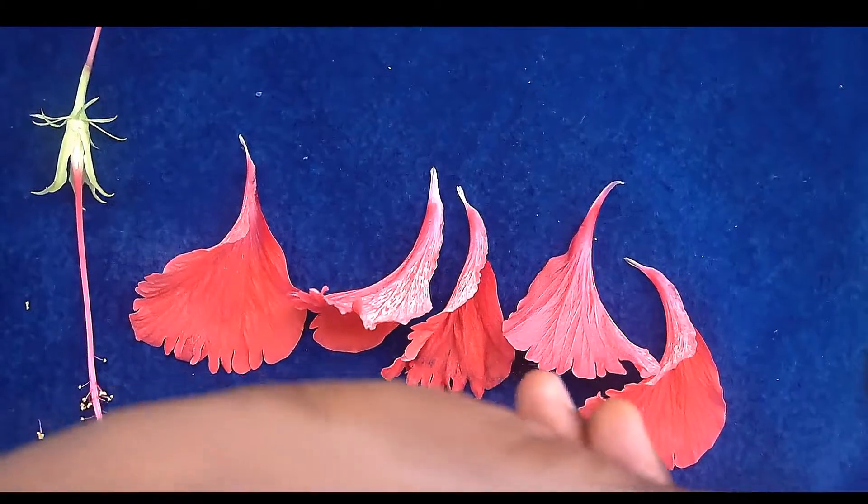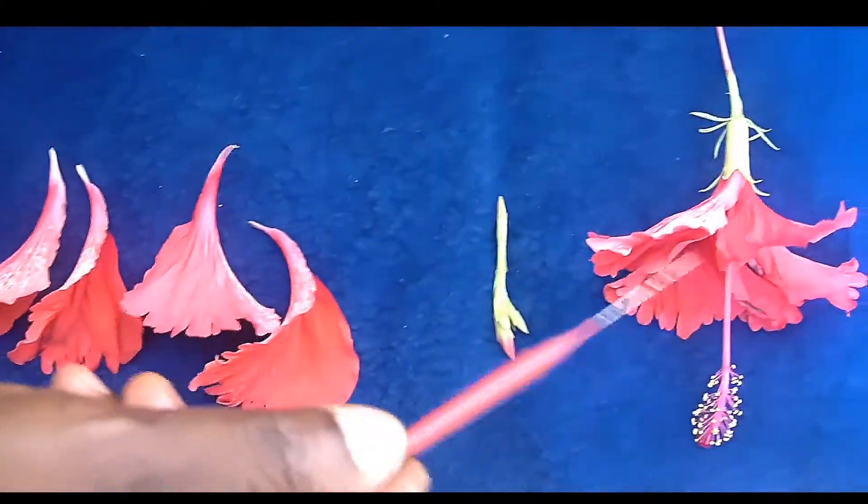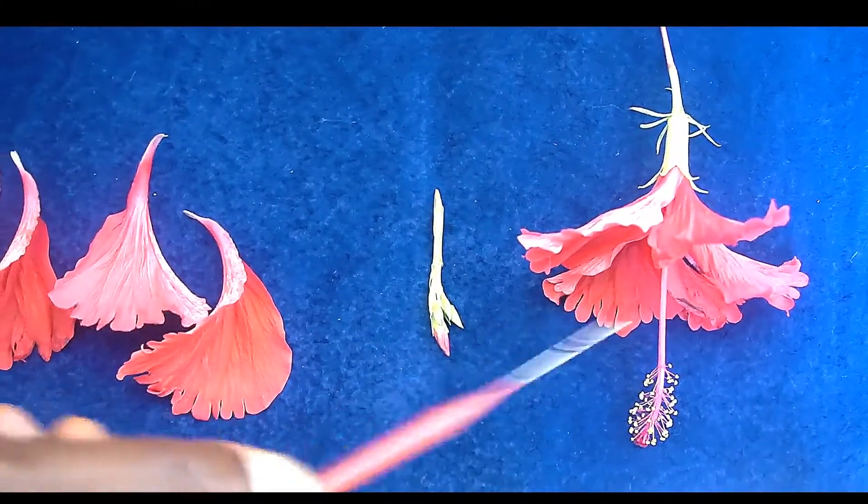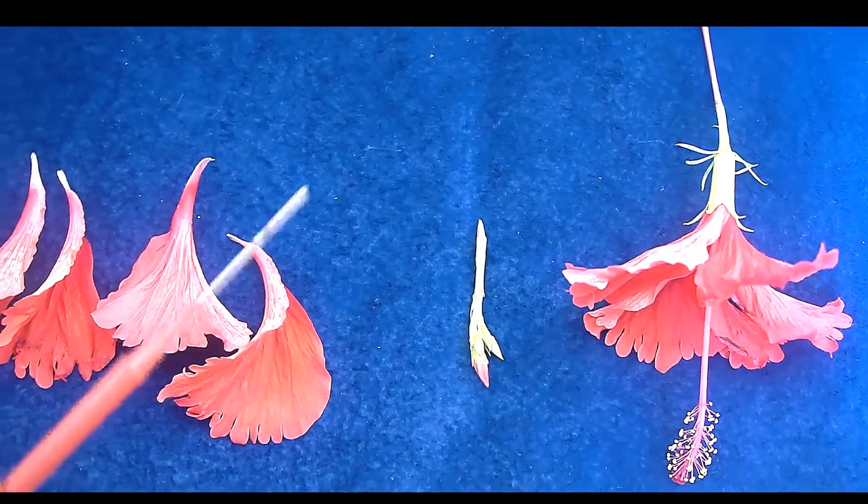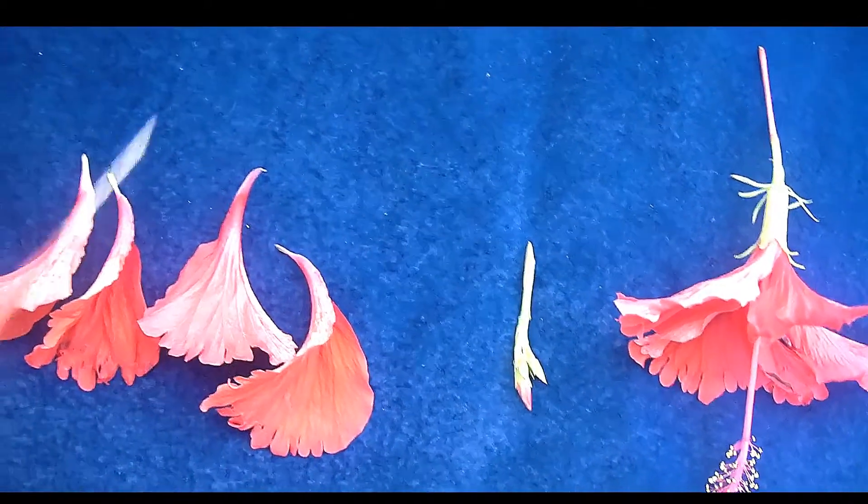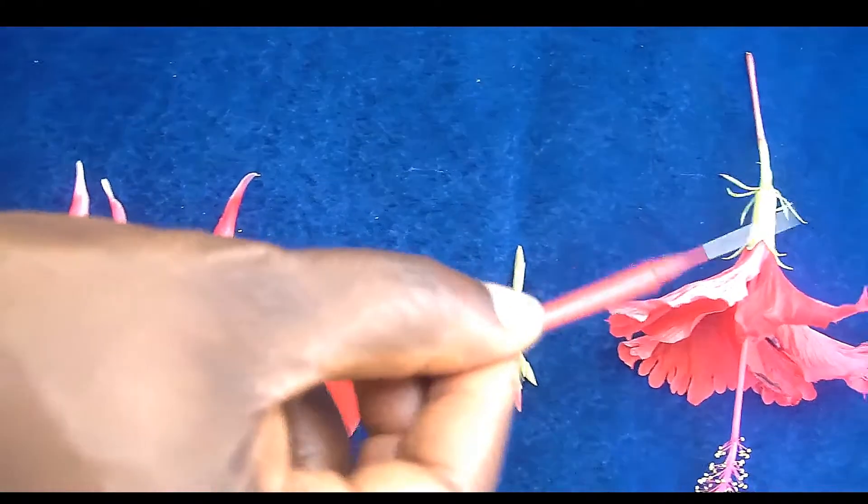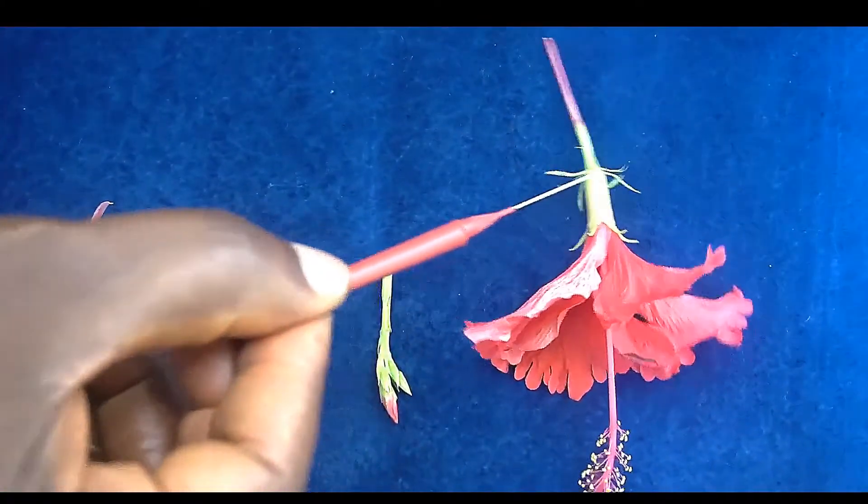And all of them together, we have them here, called corolla. In the same way, the calyx, all of these together, we call the calyx.